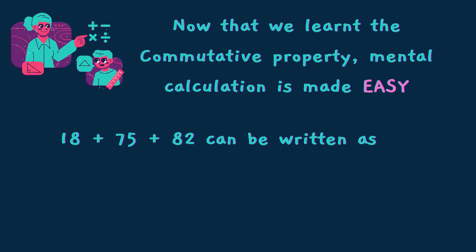Why do we have to know these properties? Don't you guys think knowing this makes solving problems easier? Here 18 plus 75 plus 82 can be written as 18 plus 82 plus 75. 18 plus 82 is 100. And 100 plus 75 is 175. Easy!